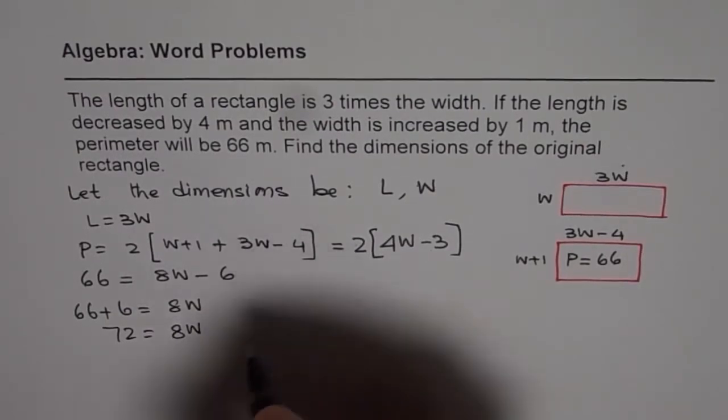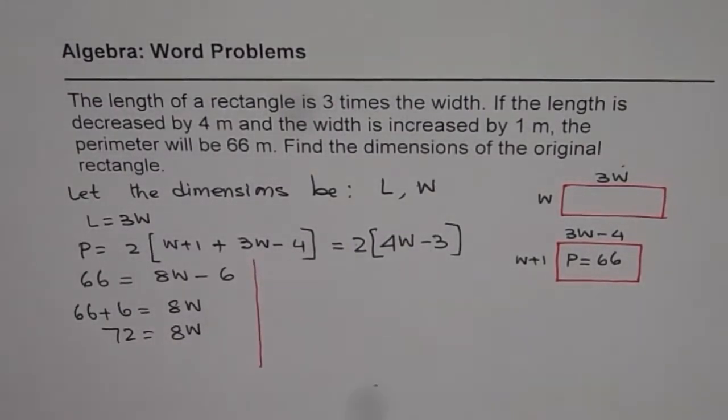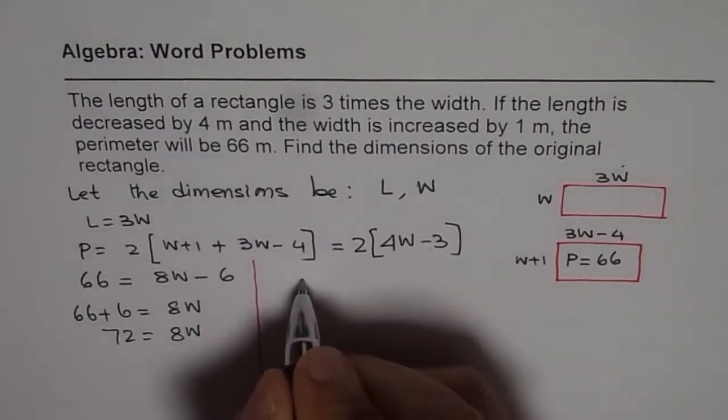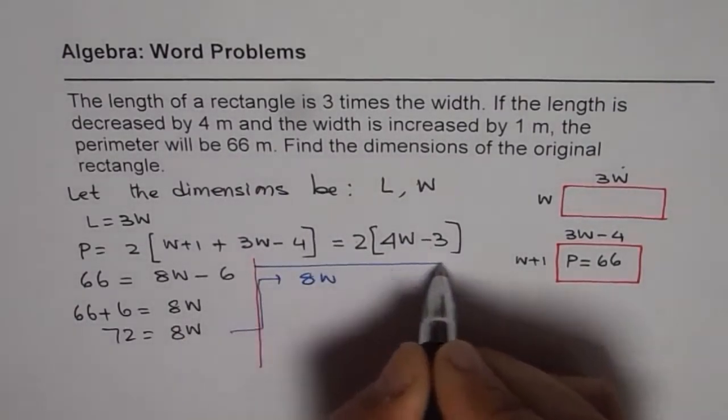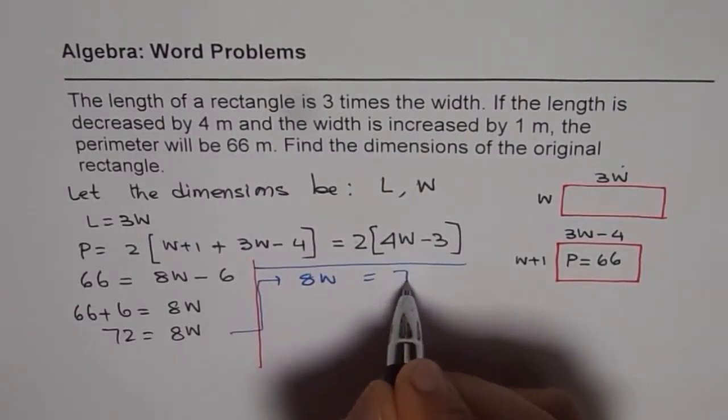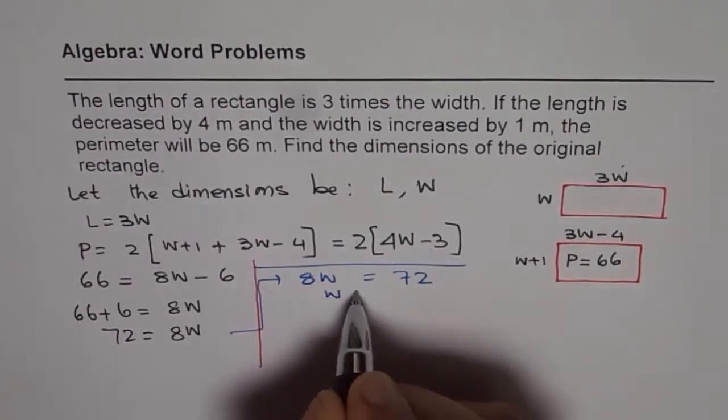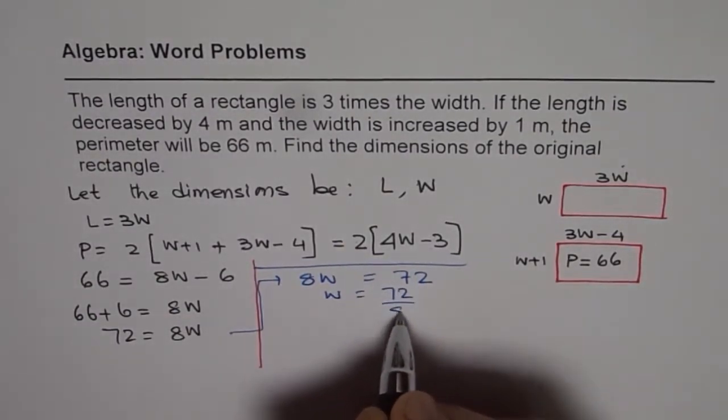From here, we can get all the values which are required. Let me rewrite this. So we have 8W equals 72. So W is 72 divided by 8, and that is nine.